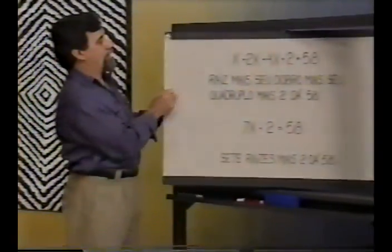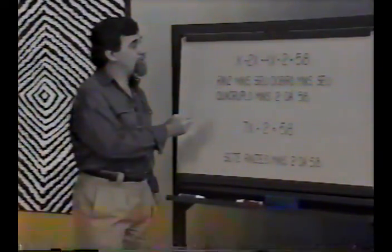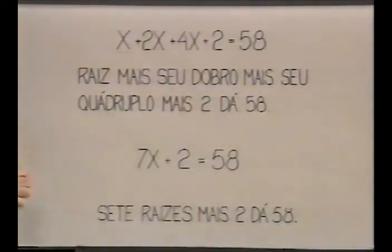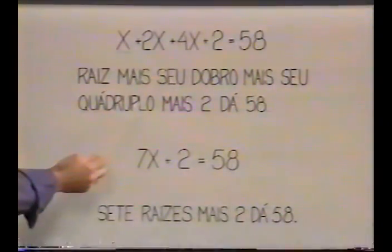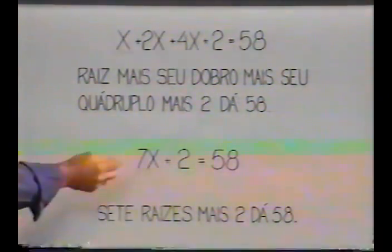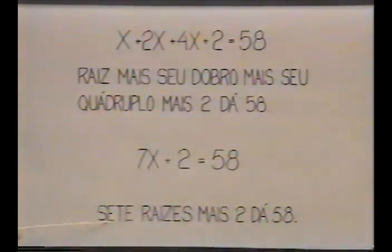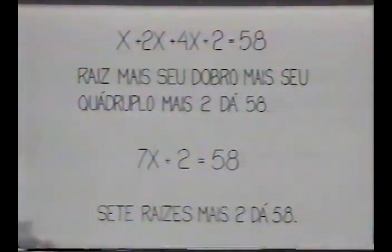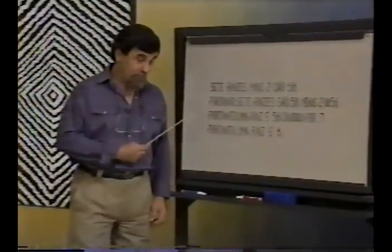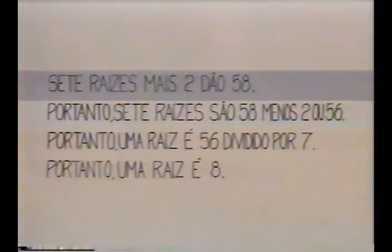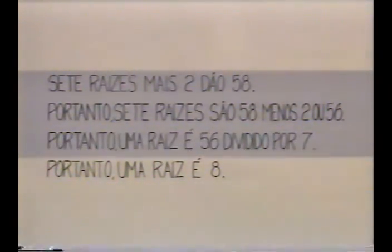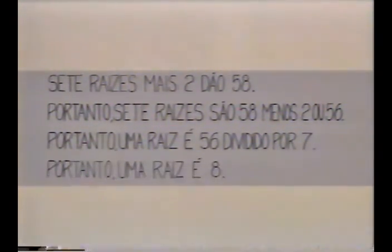Na solução do problema da herança dos camelos, a gente armou inicialmente a equação X + 2X + 4X + 2 = 58. Eles escreviam isso com palavras: raiz mais seu dobro mais seu quádruplo mais dois, dá cinquenta e oito. E simplificavam: raiz mais seu dobro mais seu quádruplo são sete raízes. Assim a equação é: sete raízes mais dois, dá cinquenta e oito. E a solução também era em palavras: sete raízes são cinquenta e oito menos dois, ou cinquenta e seis — operação inversa. Uma raiz é cinquenta e seis dividido por sete — novamente a operação inversa. Portanto, uma raiz é oito.